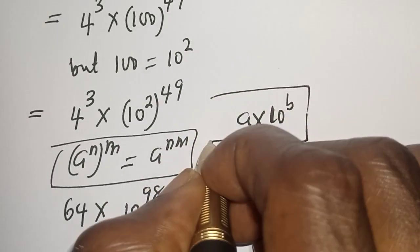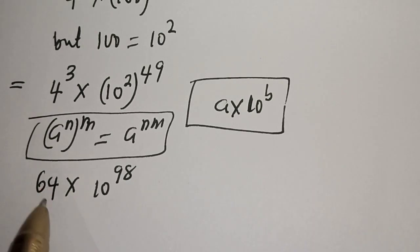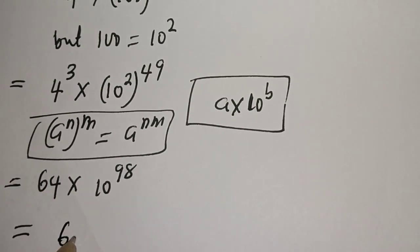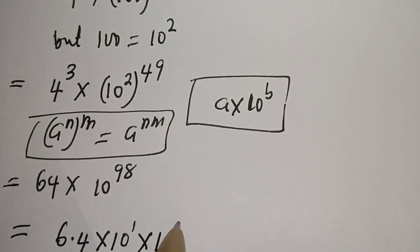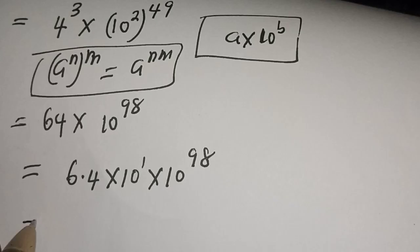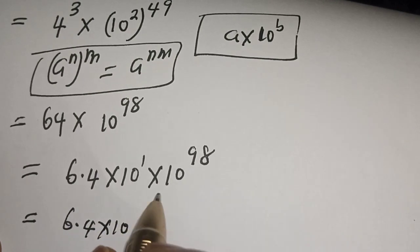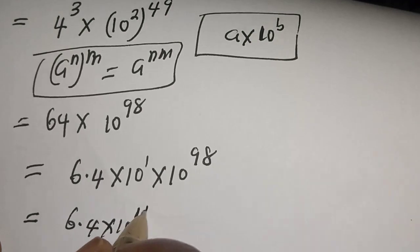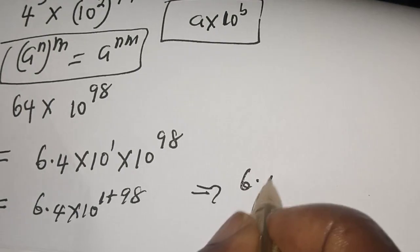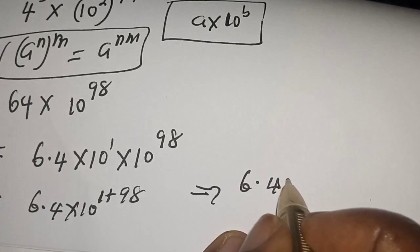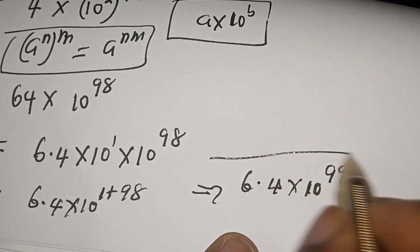Therefore, if we introduce a decimal point between 6 and 4, this becomes 6.4 times 10 raised to power 1, times 10 raised to power 98. This is equal to 6.4 times 10 raised to power (1 plus 98), which is 6.4 times 10 raised to power 99. This is the final answer.